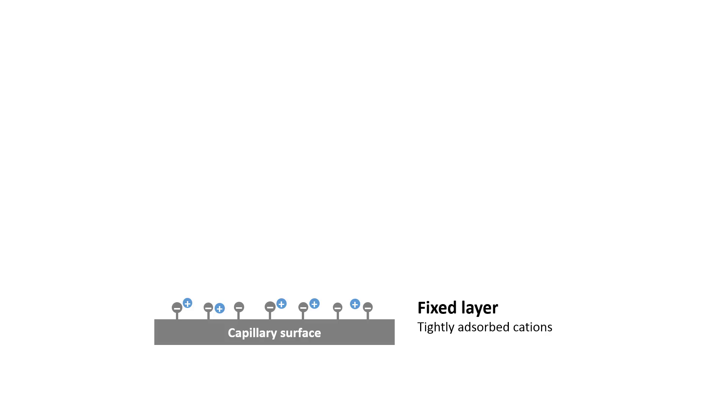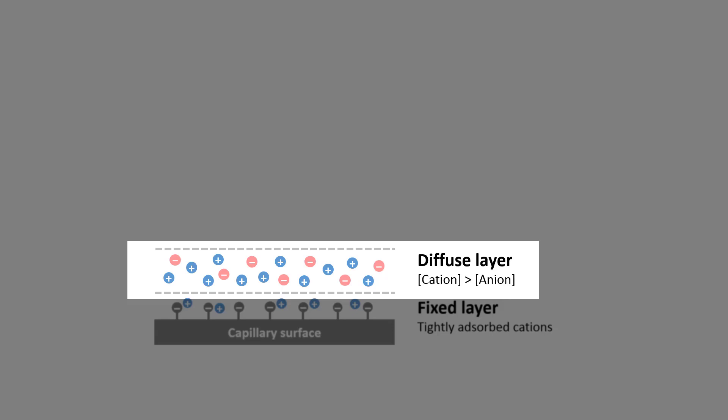However, the tightly absorbed cations can only partially neutralize the negative charge on the capillary surface. Therefore, the negatively charged surface can still attract more cations from the buffer solution. This forms a diffuse layer, where the concentration of cations is higher than the concentration of anions. Together with the fixed layer, these two layers are called the electrical double layer.